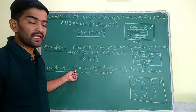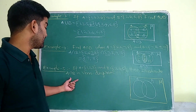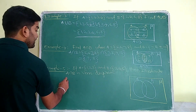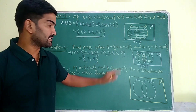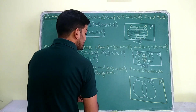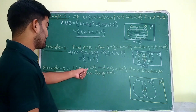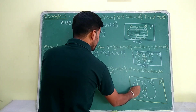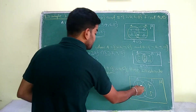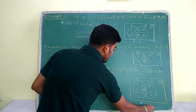Example 5: If A = {1, 2, 3} and B = {3, 4, 5}, illustrate A intersection B in a Venn diagram. Write the common elements in the common place of the Venn diagram — that is 3. Elements left in A are 1, 2 and elements left in B are 4, 5. A intersection B means only the common place is shaded, so that is A intersection B.